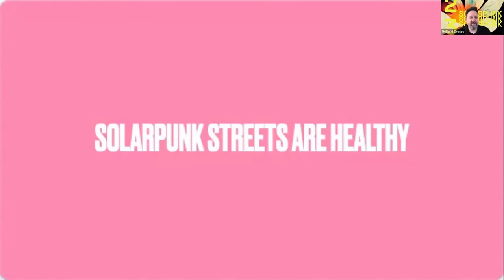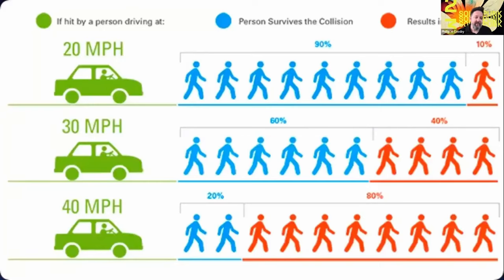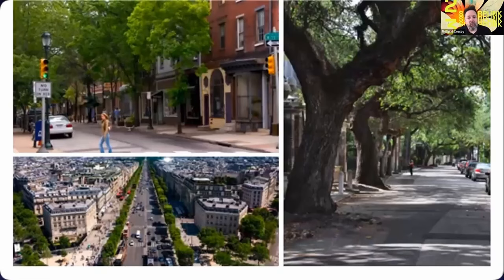The fifth principle is that solarpunk streets are healthy. The decrease in speed I just spoke about has the added benefit of making streets much safer: in car-versus-pedestrian collisions, the pedestrian survives 90 percent of the time at 20 miles per hour, but only 20 percent of the time at 40 miles per hour — and this has significant impacts on the safety of streets for pedestrians, especially children.